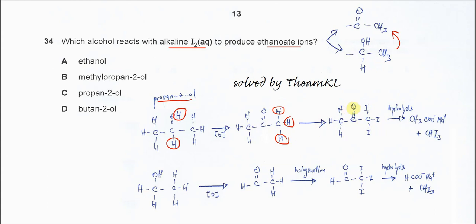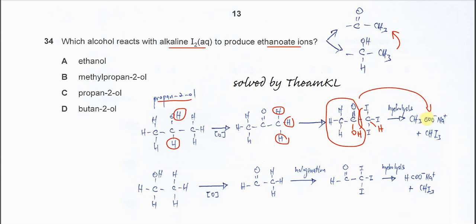After that, this compound will undergo hydrolysis — the bond here breaks. This carbon gets hydrogen and this carbon gets OH. At the end it will form ethanoid acid. This ethanoid acid further reacts with sodium hydroxide and will form the salt — sodium ethanoid.